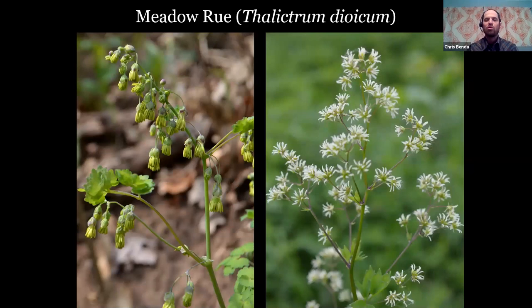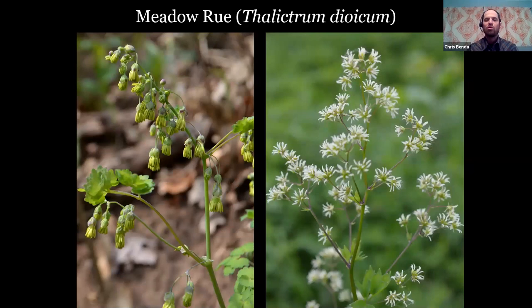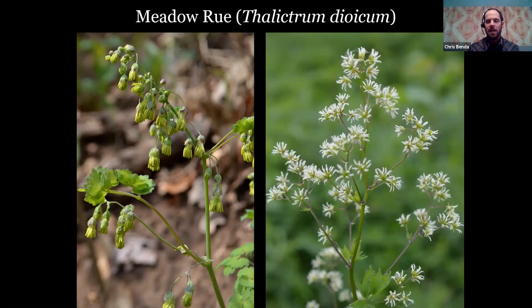Now here's the meadow rue — blue cohosh has leaves that resemble it. This is our early meadow rue, Thalictrum dioicum. 'Dioicum' means dioecious — a plant is either male flowers or female flowers but not both on the same plant. On the left we have a male plant with stamens hanging there; on the right is a female plant with white stigmas that will capture pollen and make seed. It's in the buttercup family, and there are three species of Thalictrum in Illinois — the other two bloom in the summer.